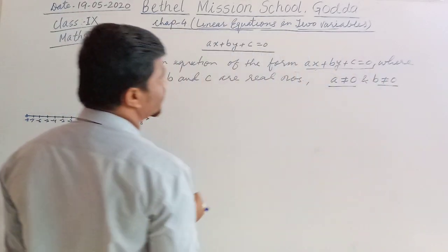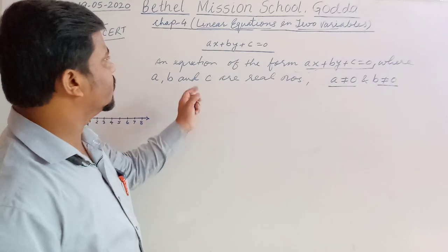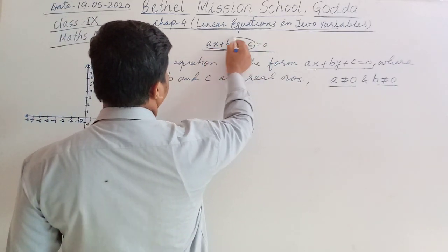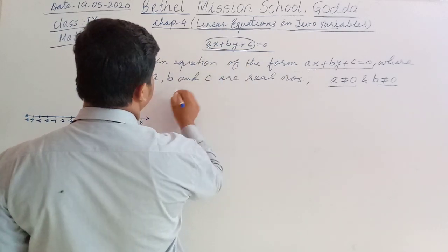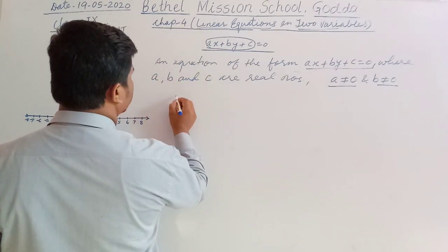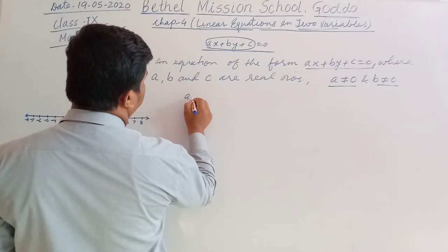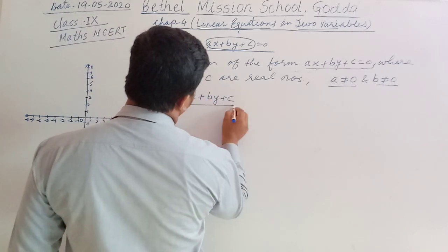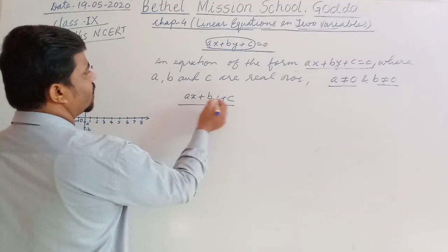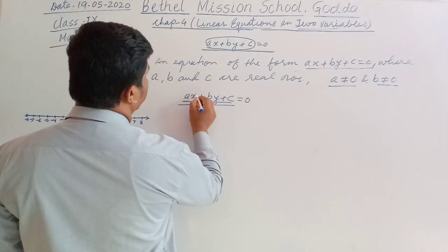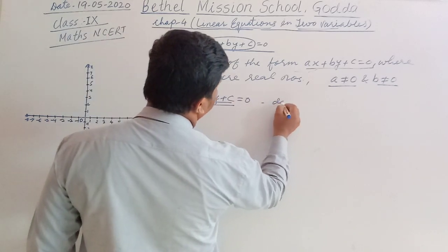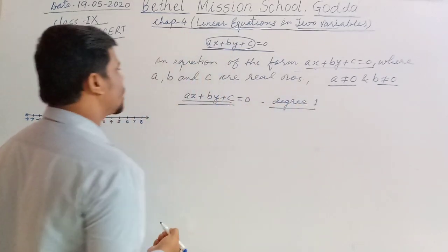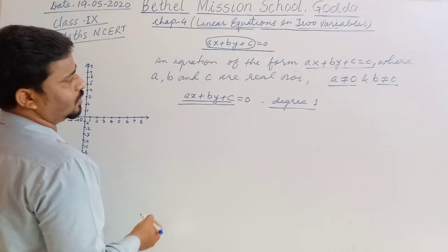Linear Equation means the degree of that expression should be 1. Degree is 1. That is why it is called a Linear Equation — Linear.